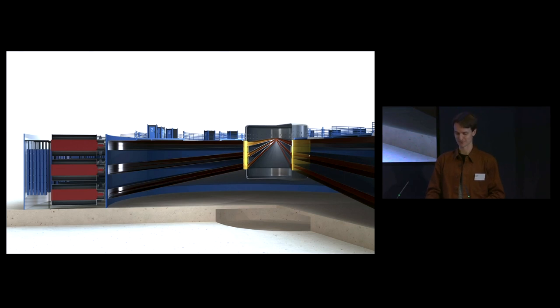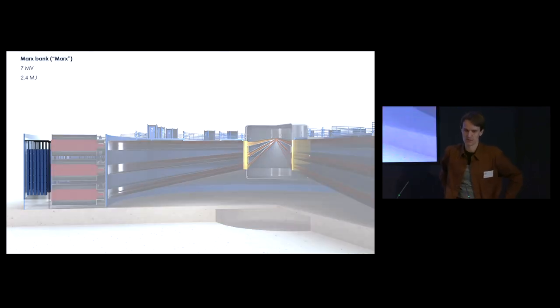The first part is the Marx bank - an arrangement that charges capacitors in parallel to a charge voltage, but discharges them in serial and adds voltages together. The charge voltage is about 90 kilovolts, but discharge voltage of the Marx bank as a whole will be 7 megavolts. The stored energy per Marx bank is 2.4 megajoules, a bit bigger than the Z machine at about 1 megajoule per Marx bank, and also slightly higher voltage.